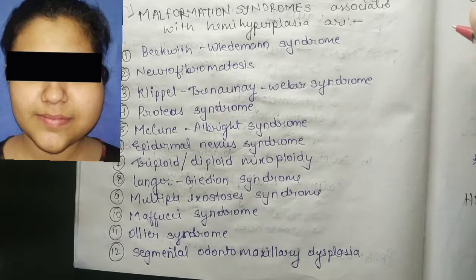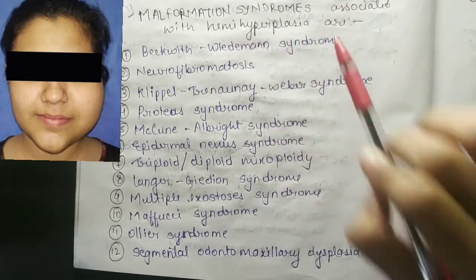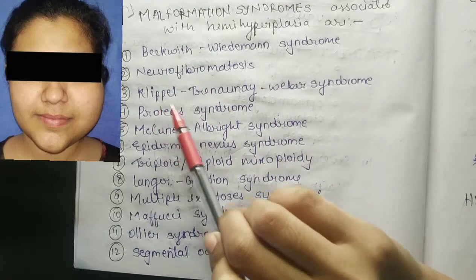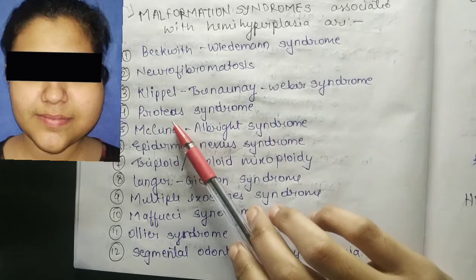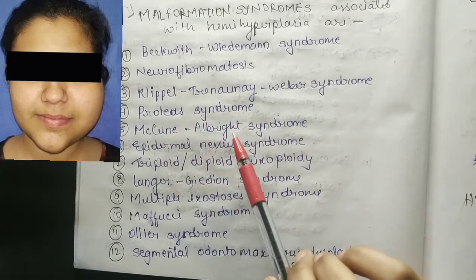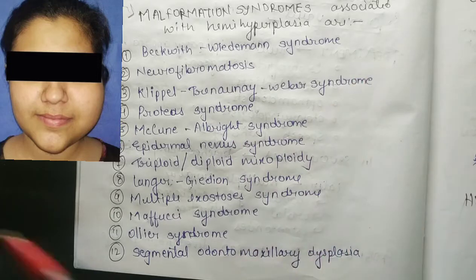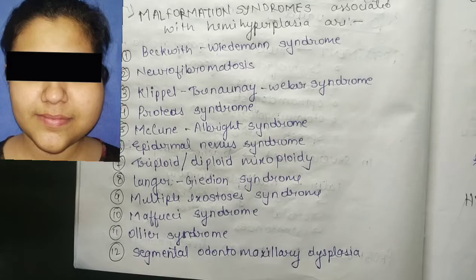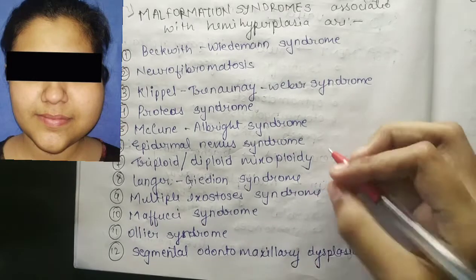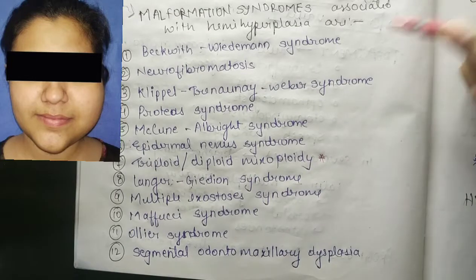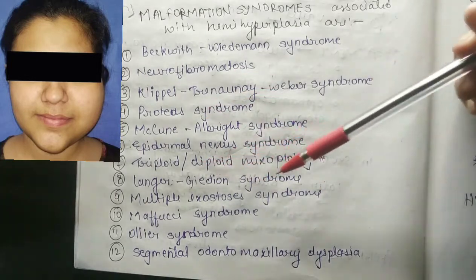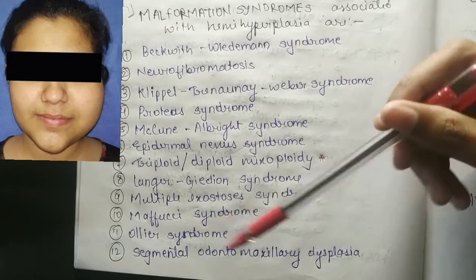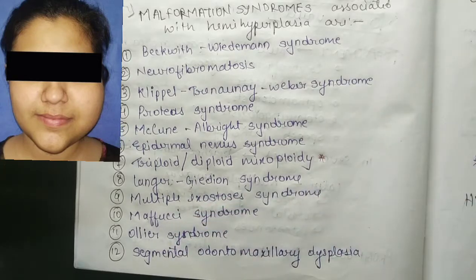Malformation syndromes associated with hemi hyperplasia include: Beckwith-Wiedemann syndrome, neurofibromatosis, Klippel-Trenaunay-Weber syndrome, Proteus syndrome, McCune-Albright syndrome, epidermal nevus syndrome, triploid-diploid mixoploidy, Langer-Giedion syndrome, multiple exostosis syndrome, Maffucci syndrome, Ollier syndrome, and segmental odontomaxillary dysplasia.